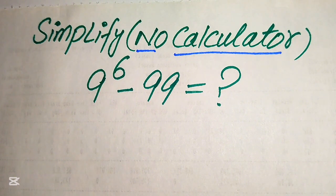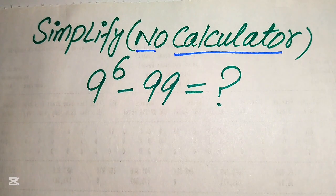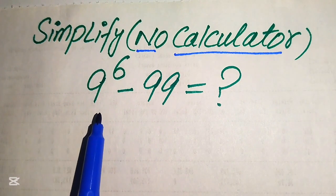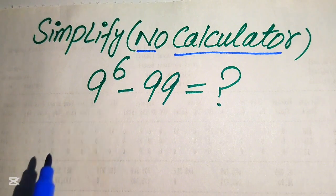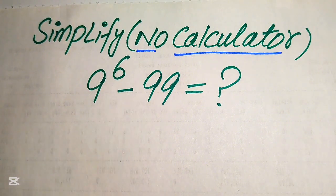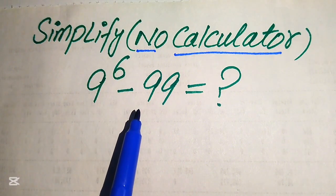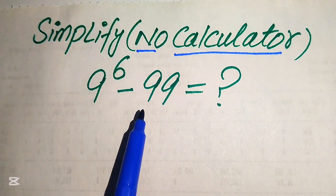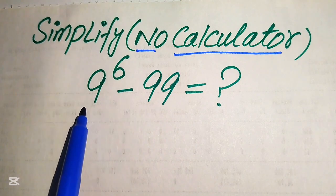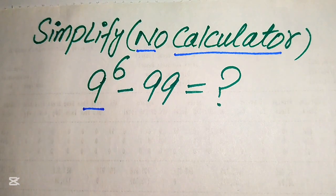The very first thing we are going to do is focus on the exponent of this term. In order to simplify or write this algebraic expression into its lowest form, we first need to find the value of 9 to the power of 6.